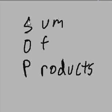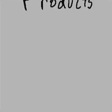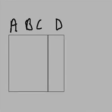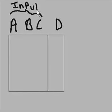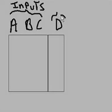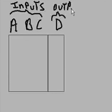Let's talk about the sum of products. Let's say we have three inputs: A, B, and C. And this is our output, D.